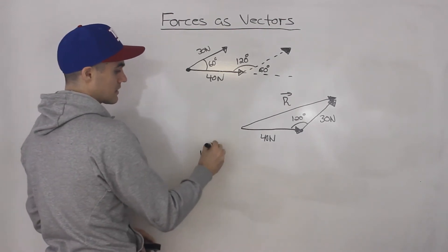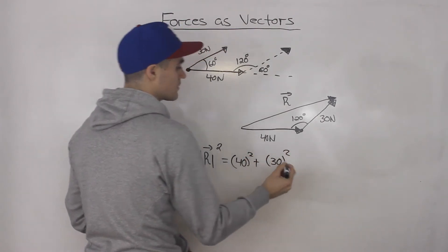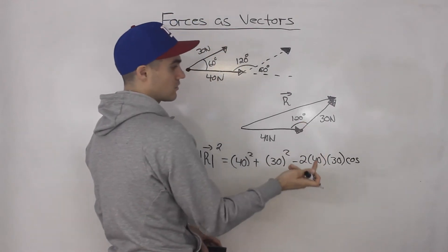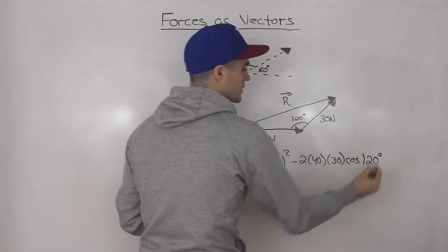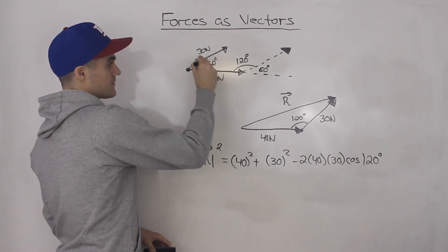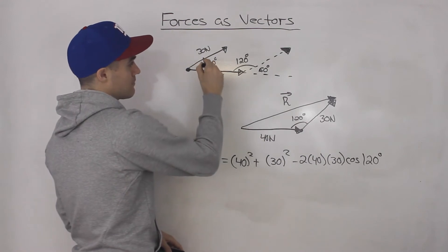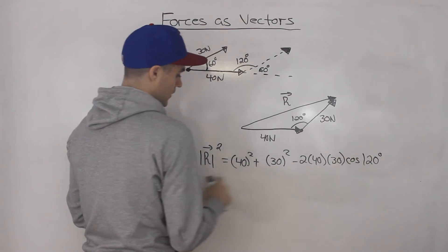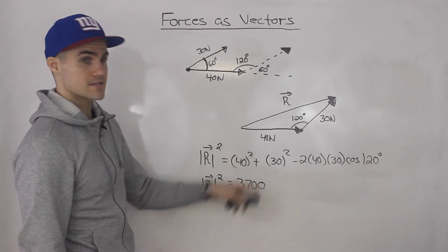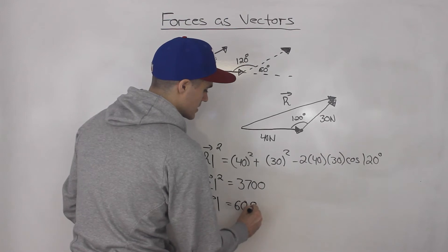Using cosine law: the magnitude squared equals one side squared plus the other side squared minus two times one side times the other side times cosine of 120 degrees. The key insight is that the angle between the forces (60°) is not the same as the angle in the triangle when adding forces — it's 180 minus 60, which is 120 degrees. When you calculate this, you get 3700, and square-rooting both sides gives a resultant magnitude of 60.8 newtons.